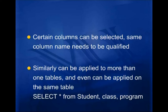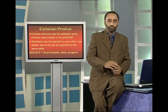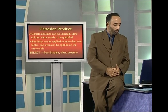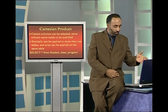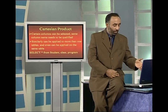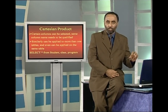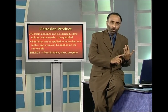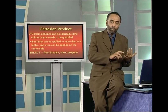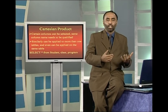For example: SELECT * FROM student, class, program. If student has 10 rows, class has 10 rows, and program has 10 rows, the output will have 1000 rows, because each row of student is combined with each row of class, and then each of those combinations is combined with each row of program — giving 10 × 10 × 10 = 1000 rows.